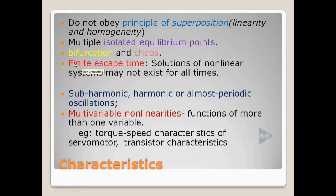Sub-harmonic, harmonic, or almost-periodic oscillations are possible in non-linear systems. When a sinusoidal input is given, there are many harmonics present — sub-harmonic and periodic-type oscillations will be present in the output. If the non-linearity is multivariable, functions of more than one variable are present, and such non-linearity is called multivariable non-linearity.